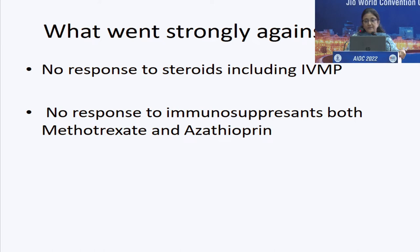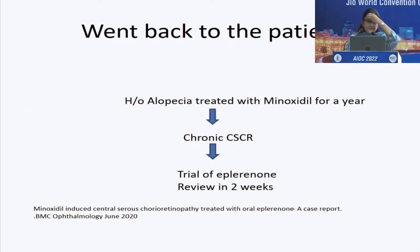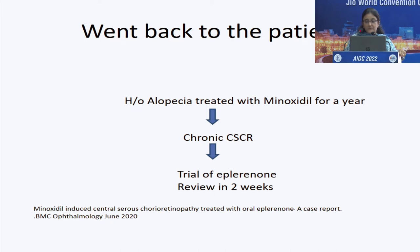Why did we hold the entire history of treatment against VKH? Because she was getting no response to steroids including IV methylprednisolone, which is very unlikely in inflammatory pathology. Also there was no response to any kind of immunosuppressants and she was already on two. We gave a trial of eplerenone and reviewed in two weeks — absolutely no response and no change on OCT findings.